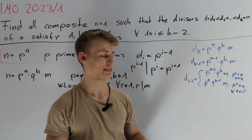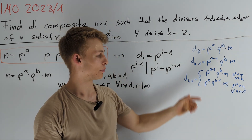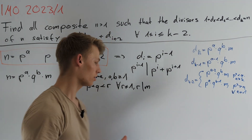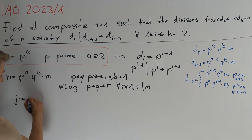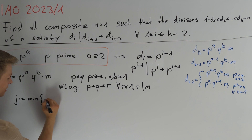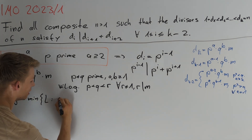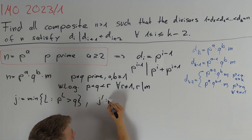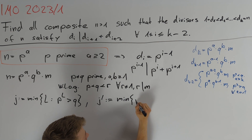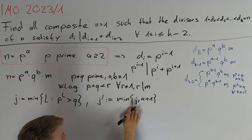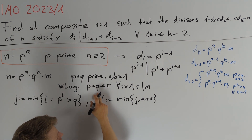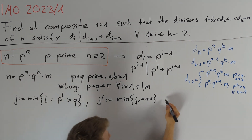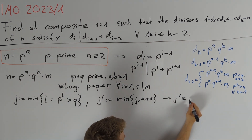In the same way we can go on, and since it's not possible to always land in the first case, we consider the point where we are in the second case and try to get a contradiction. Let j be the minimum of the set of all integers l such that p^l is greater than q, and let j' be the minimum of j and a plus 1. Note that j is at least 2 since p is less than q, and a+1 is at least 2, so j' is greater than or equal to 2.